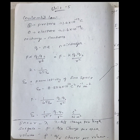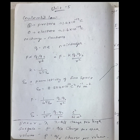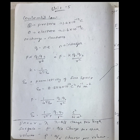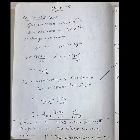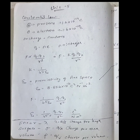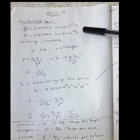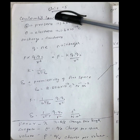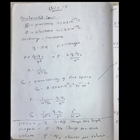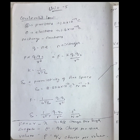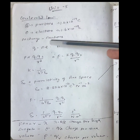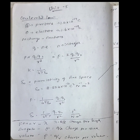Hello everyone. In this video on PG-TRB Physics Unit 5, Electromagnetic Theory, we begin with Coulomb's law. There are two types of charges: positive charge and negative charge. A proton carries positive charge and an electron carries negative charge, each with a value of 1.6 × 10⁻¹⁹ coulombs. The unit of charge is the coulomb. Charge can be identified as q = n × e, where n is an integer.